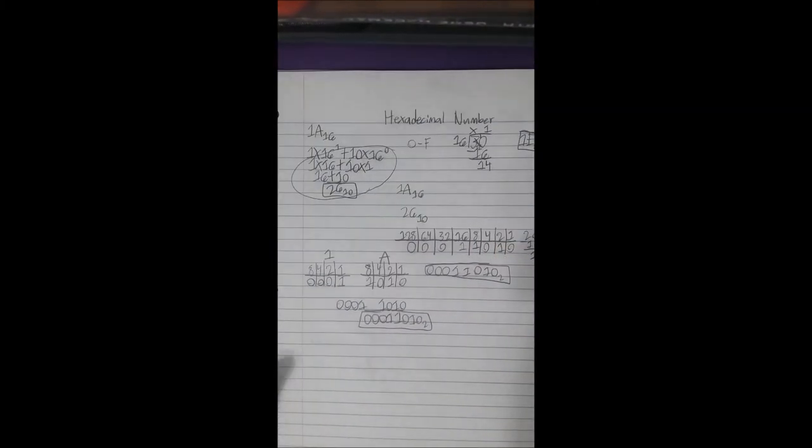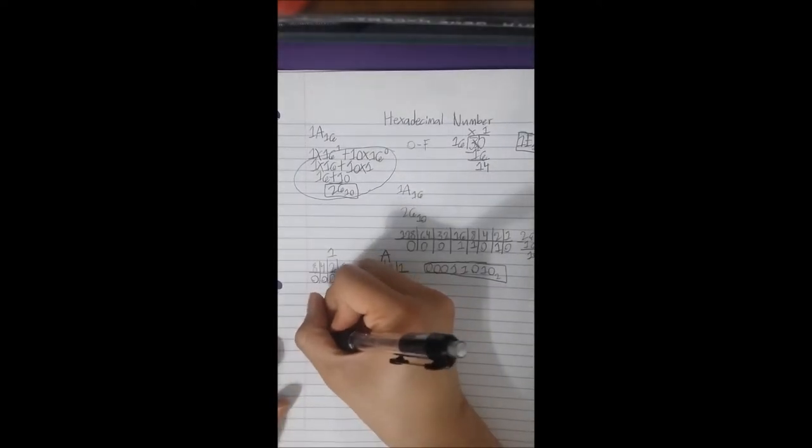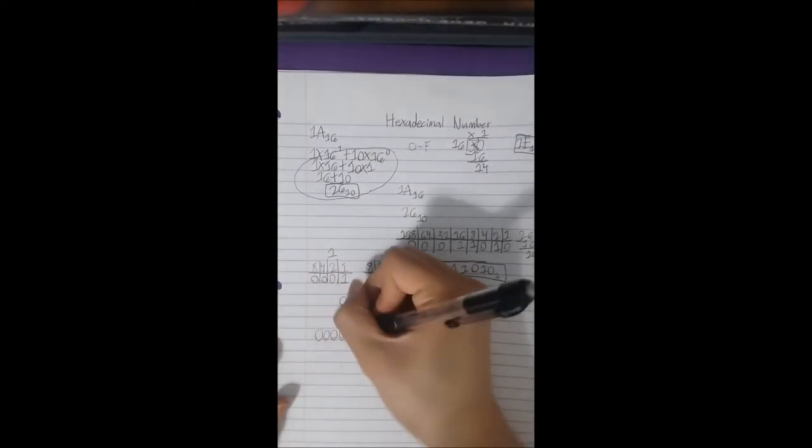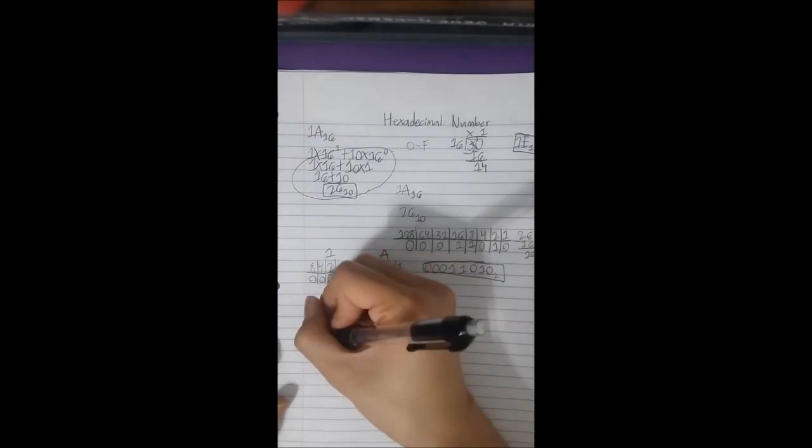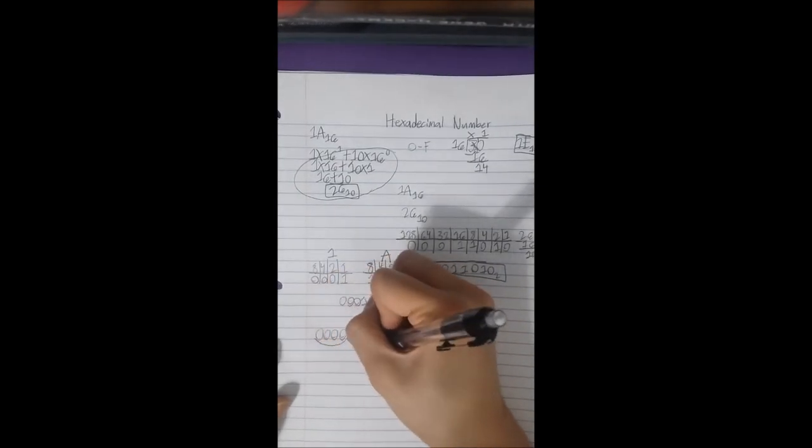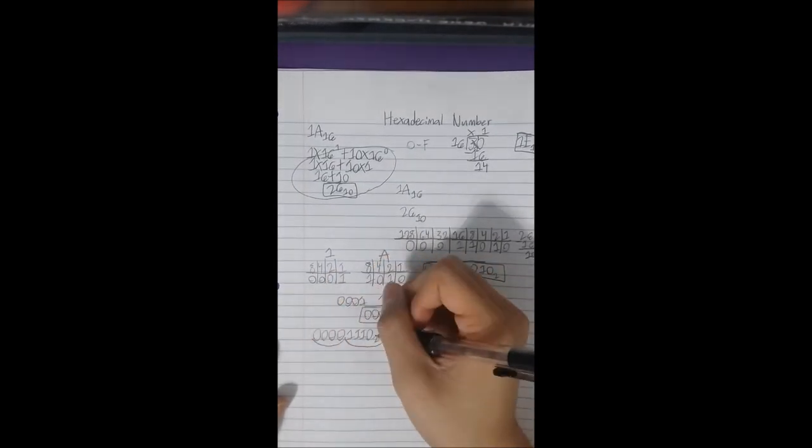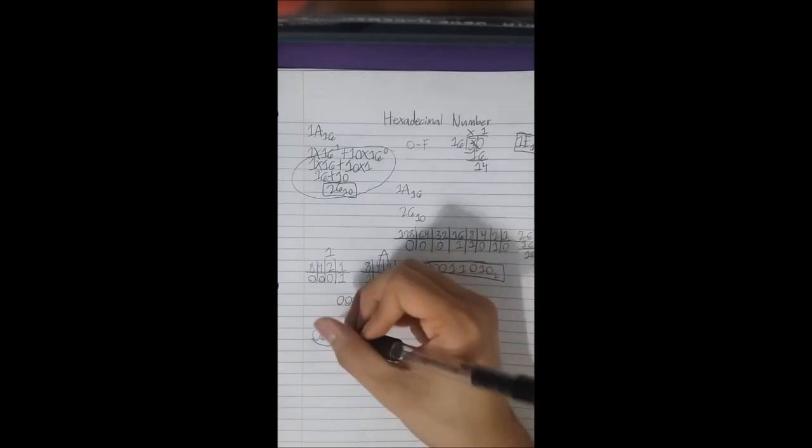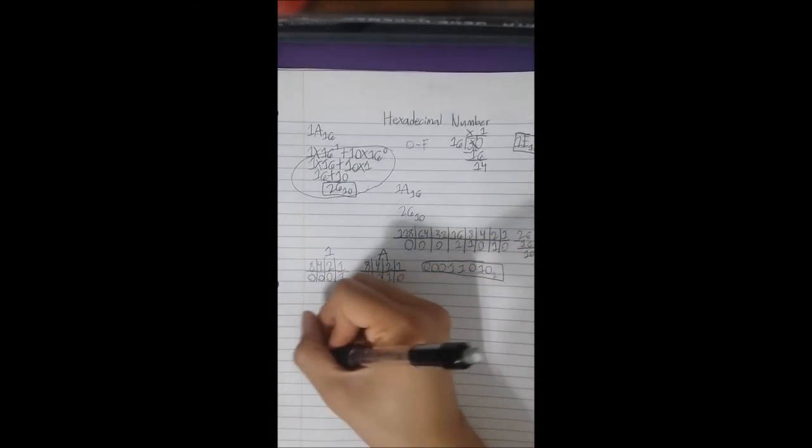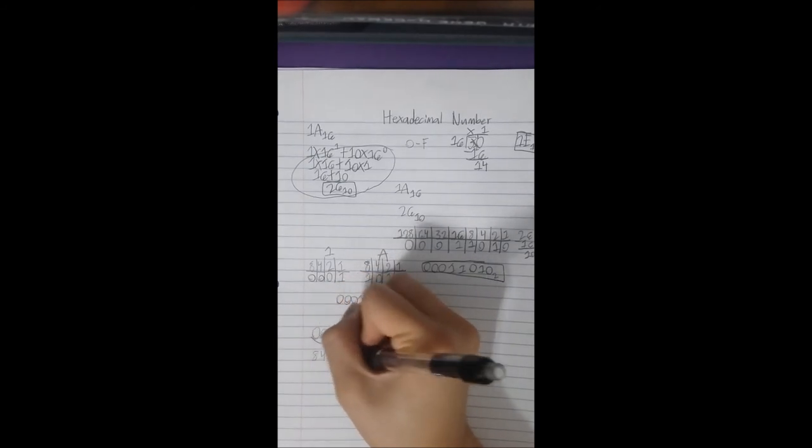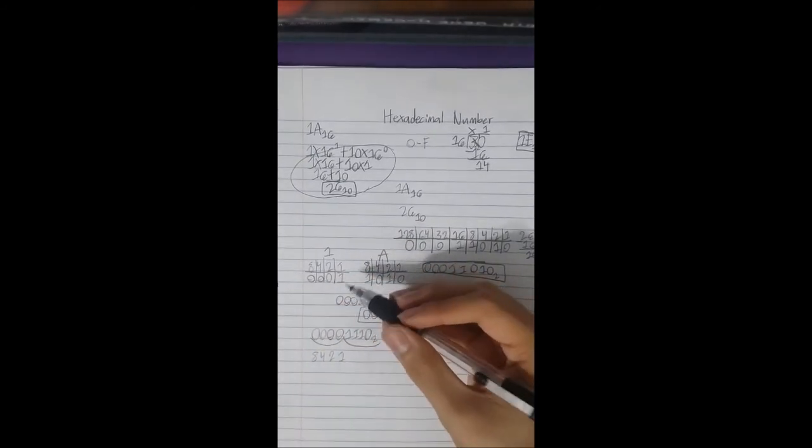Okay, next we're going to be showing how to convert from binary to hexadecimal number. So let's just use this binary. Remember that hexadecimal digit is 4 binary digits, so you're going to be divided into 4 different sets. Then you put them into the table I showed you earlier, like that one right there.